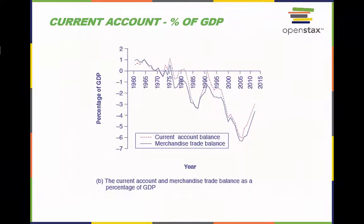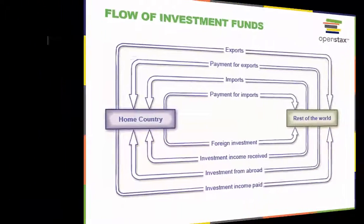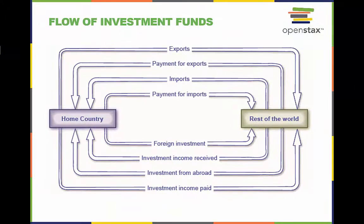In this graph, these same items — trade balance and current balance — are shown in relationship to the size of the U.S. economy, or as a percentage of GDP, from 1960 to 2012.